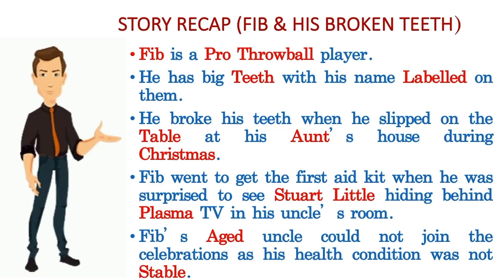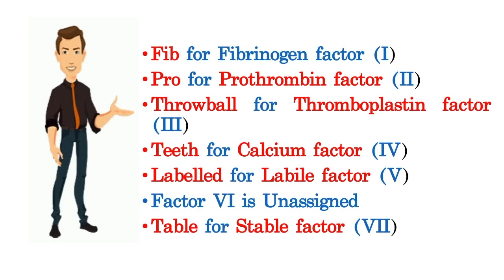Friends, we are through with the story. Before we start to see how this story is linked to the clotting factors, let's have a quick recap. Fib is our first clue — Fib is for fibrinogen, the first factor. Next clue is pro — pro is for prothrombin, the second factor.